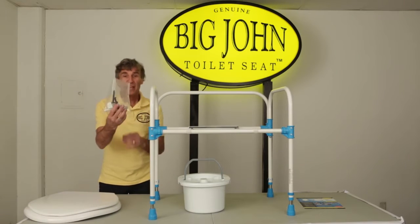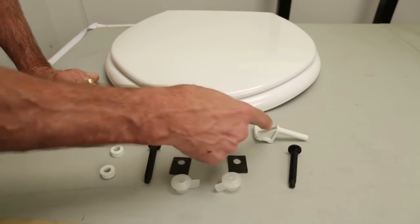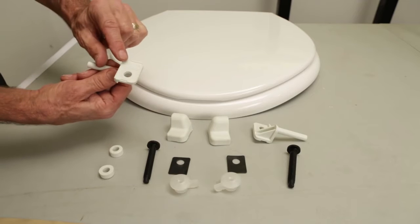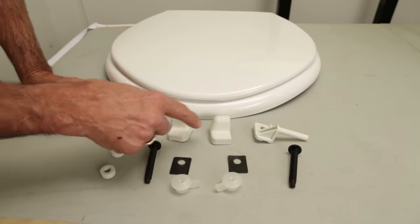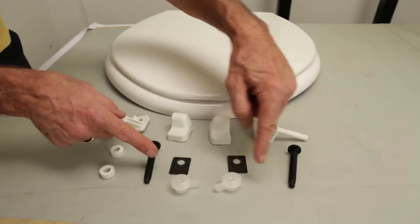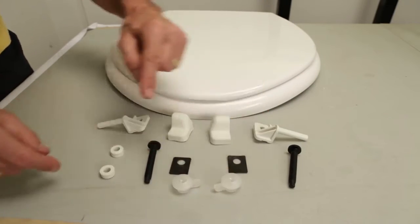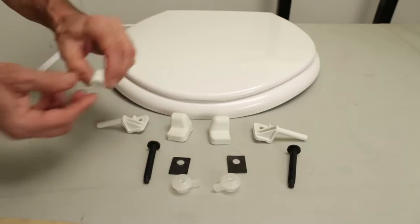It includes a hinge pack. The Big John hinge kit includes a right and left hinge marked right and left, a right and left hinge cover also marked right and left, two gaskets, two screws, two nylon beveled nuts, and two spacers which you will not need for this installation.